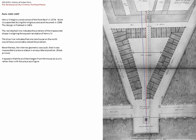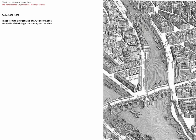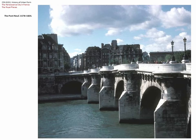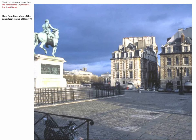There is the Turgot map, a very famous map of 1734, showing the ensemble of bridge, statue, and place all together. There is the bridge, there is the statue — and the statue is looking back into the place, which is the French name for piazza.